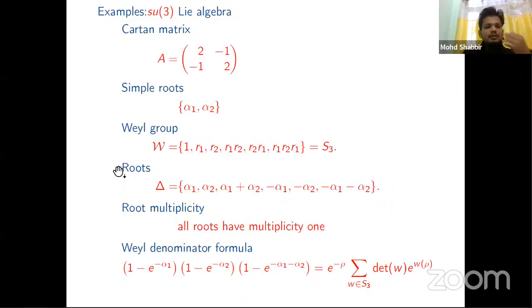For example, let's start with SU(3). The Cartan matrix is given by this. We have, let's say, α_1, α_2 are the simple roots. We have the Weyl group, which is exactly the S_3 symmetric group. The full set of roots are given by these. Every root has multiplicity one here. And we get the denominator formula here like this.